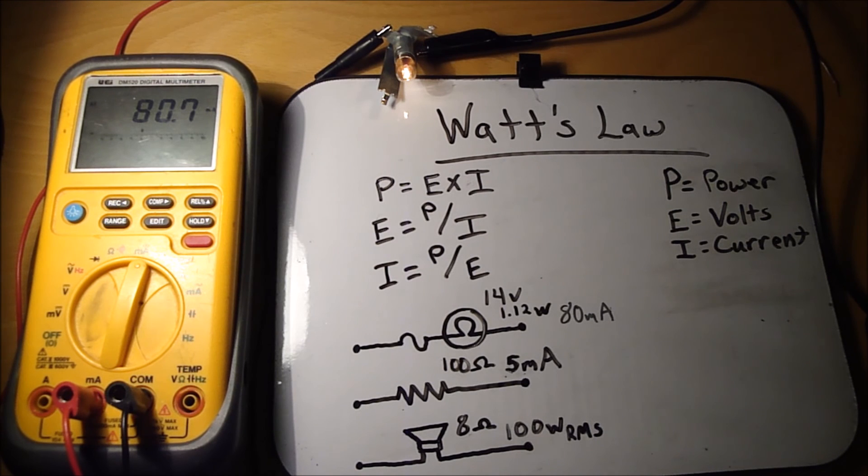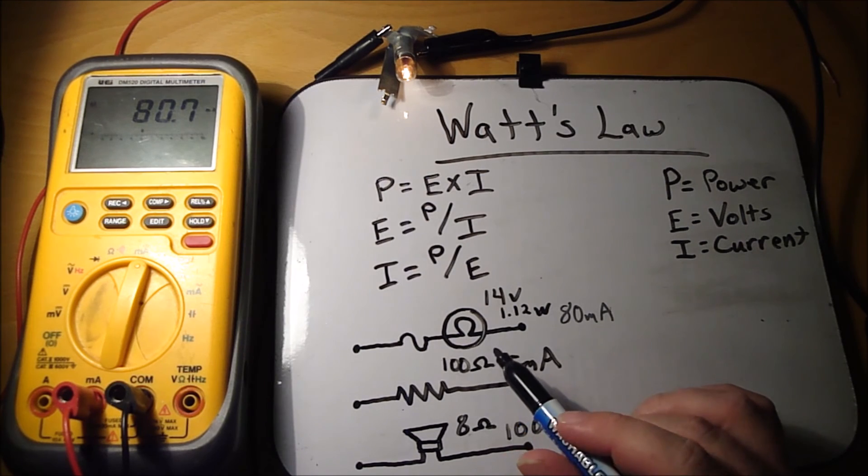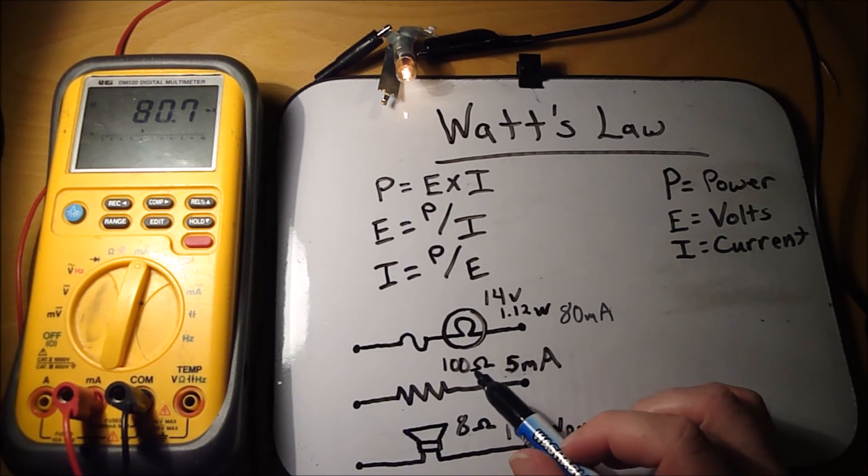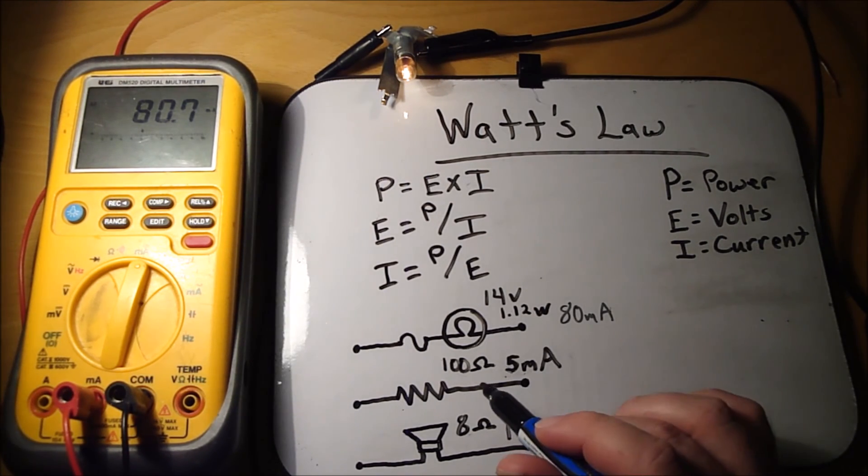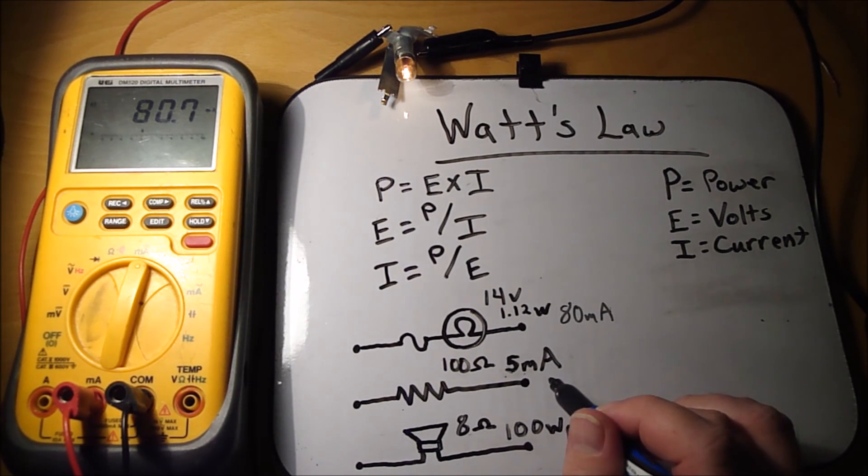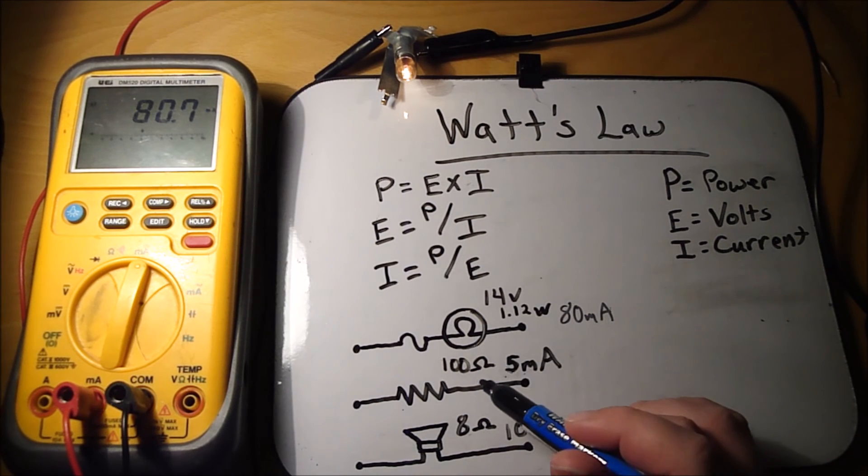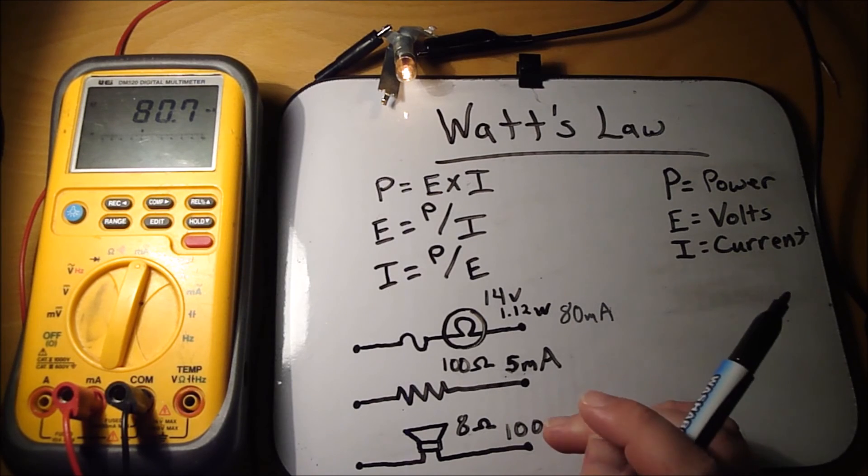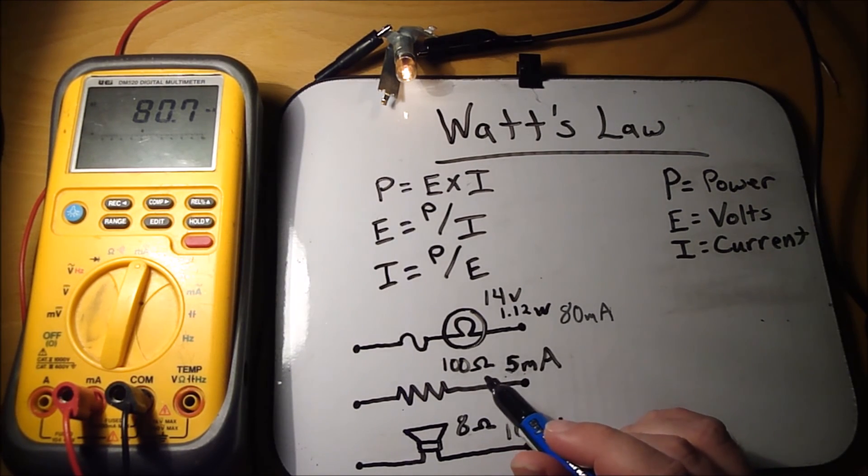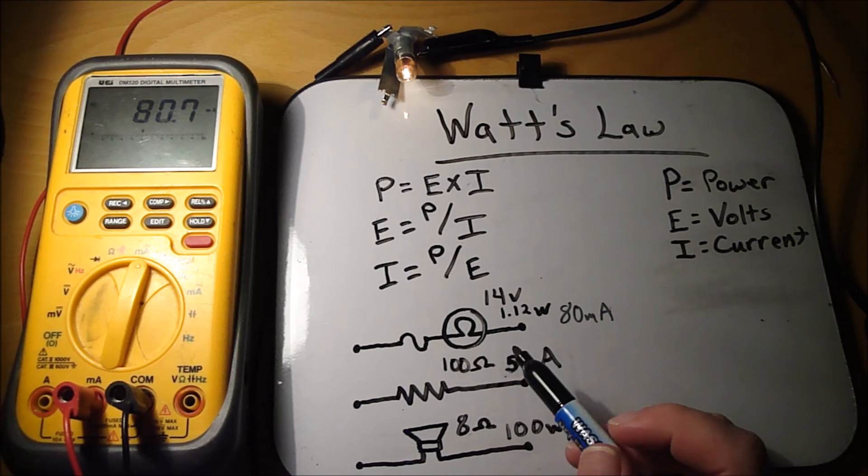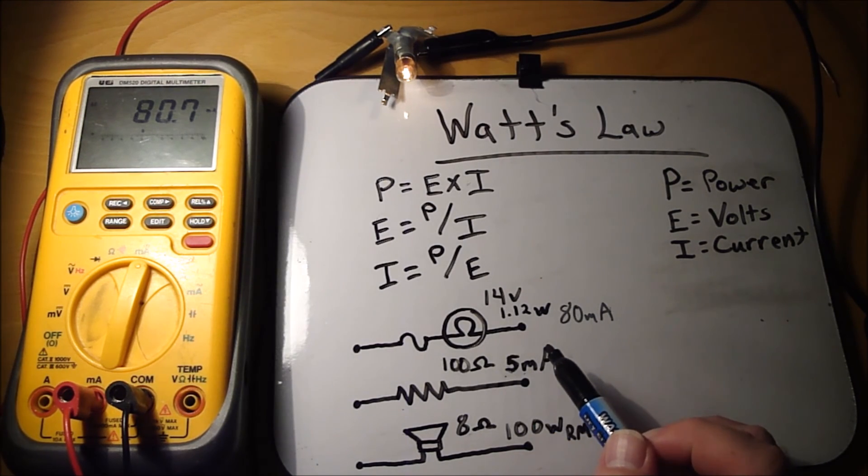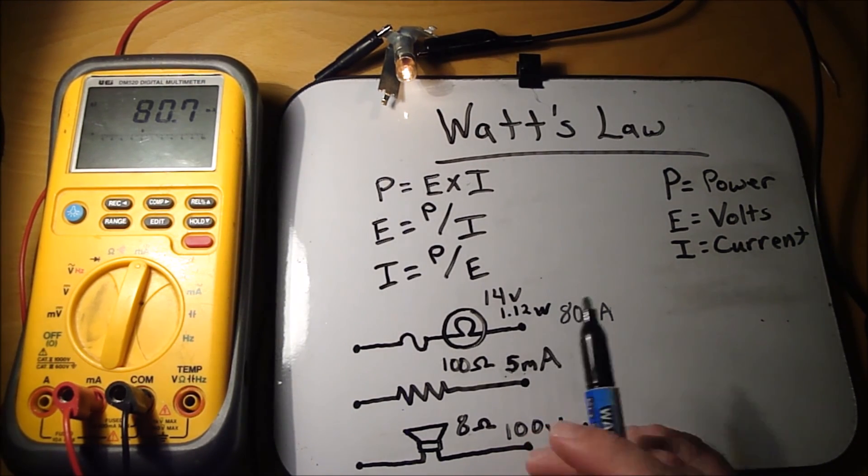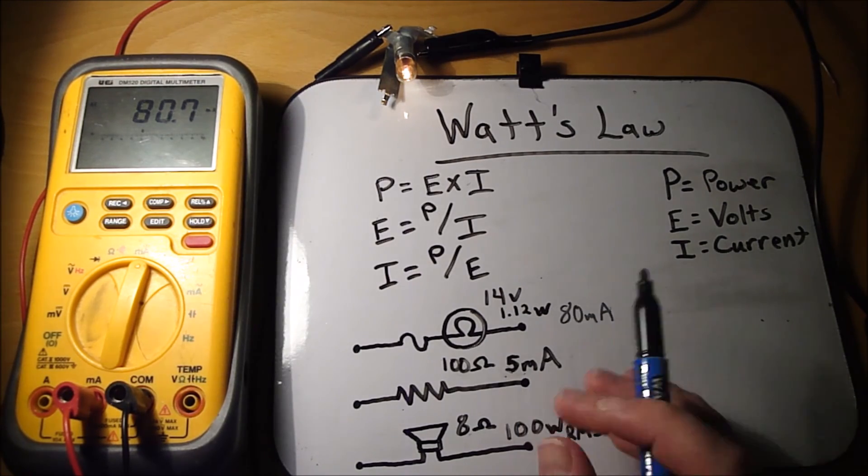Alright, so another application is, let's say you've got a 100 ohm resistor in your circuit. And you know it's going to have 5 milliamps flowing through it. And you need to know what watt resistor you need to put in there. So resistors come in different sizes. And the bigger the resistor, the more power it can dissipate. So you have quarter watt resistors, half watt, one watt.